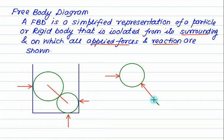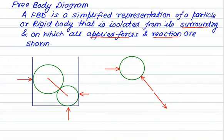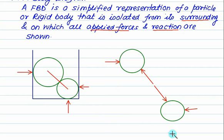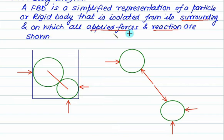If this force is the action, then this one is the reaction, and then we draw the second sphere. When the second sphere is isolated from the first, you show the effect of the wall and the floor. The wall is pushing to one side and the bottom surface is pushing upward. This cylinder is isolated from the wall, floor, and first cylinder — everything surrounding it — but all applied forces and reactions are shown. This is called the free body diagram, where your body is free from the surrounding world.